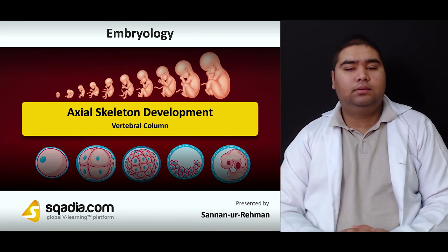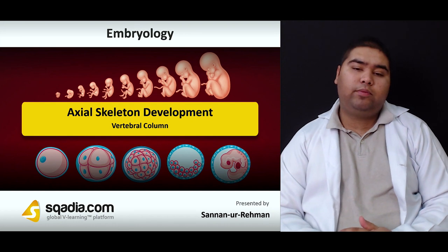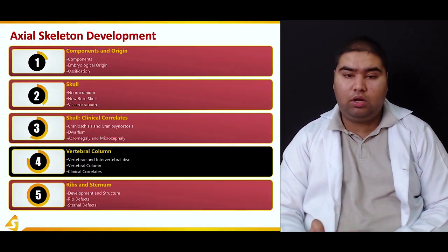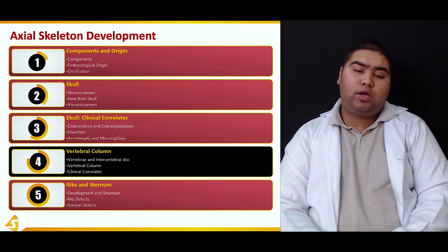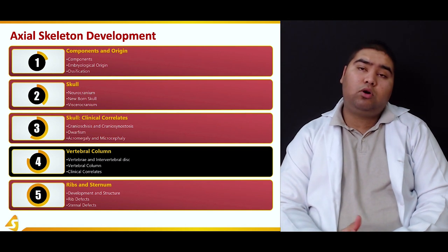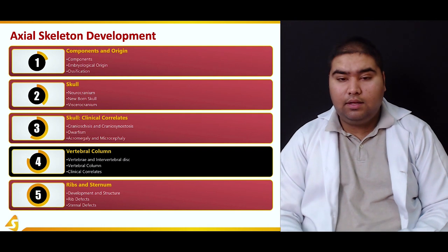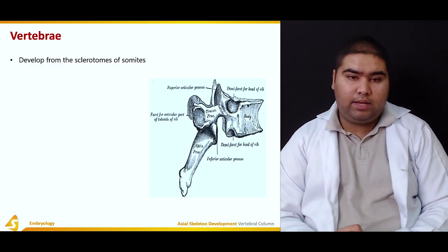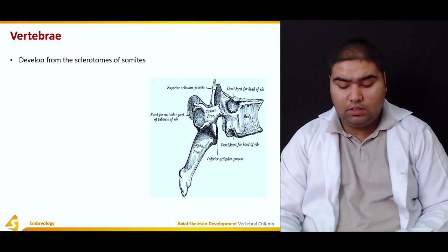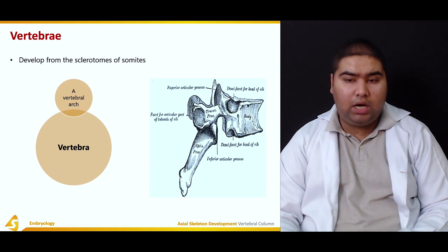Hello, once again we are talking about axial skeleton development. The topic we're going to discuss now is the vertebral column. In this subsection we are talking about vertebrae and the intervertebral discs, the vertebral column as a whole, and its clinical correlates. Vertebrae develop from the sclerotomes of the somites.